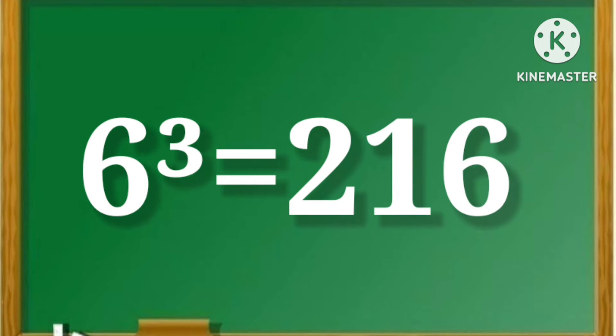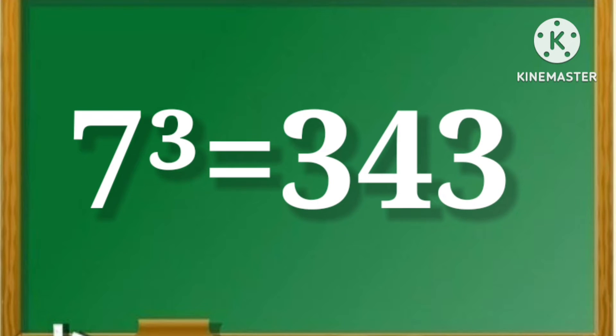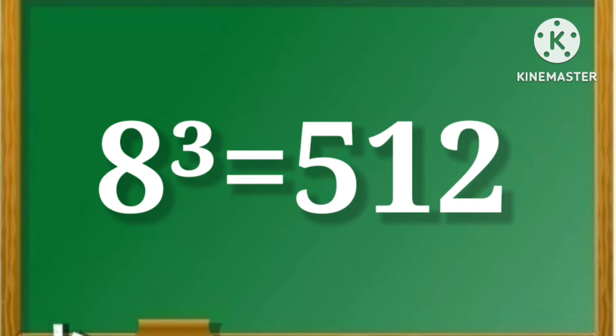1 cube is equal to 216. 7 cube is equal to 343. 8 cube is equal to 512.